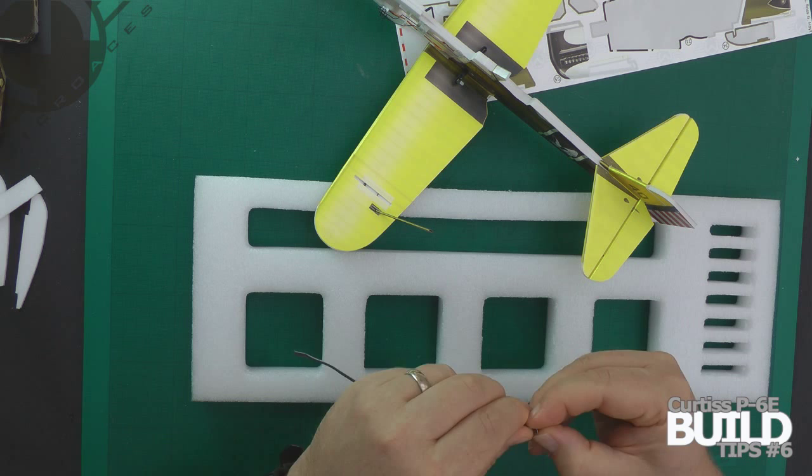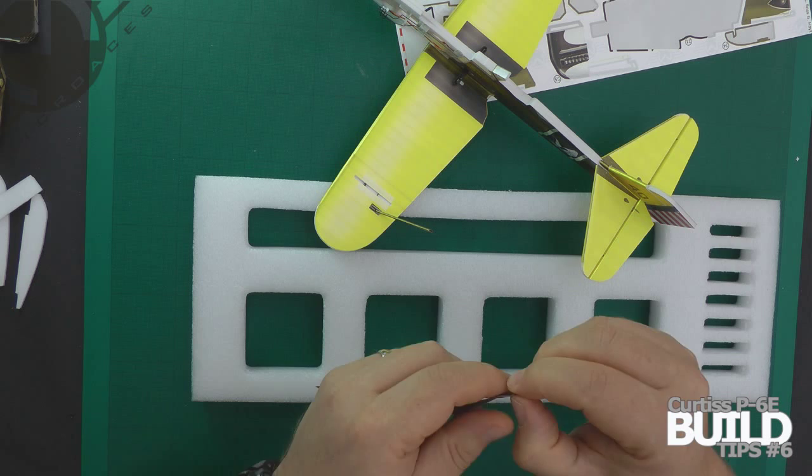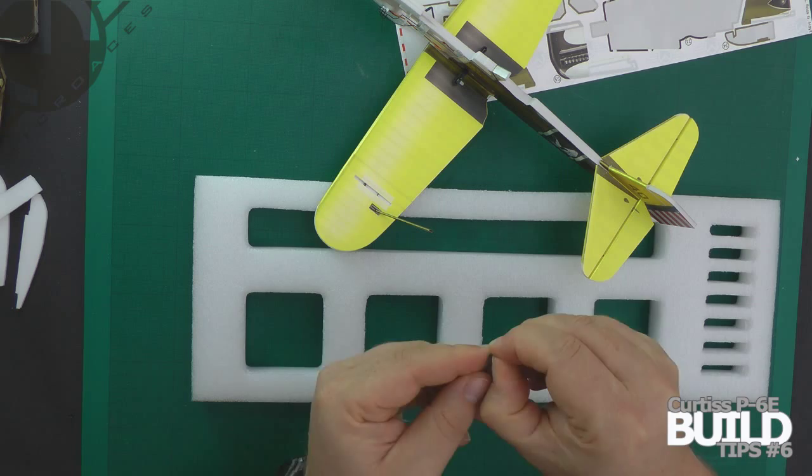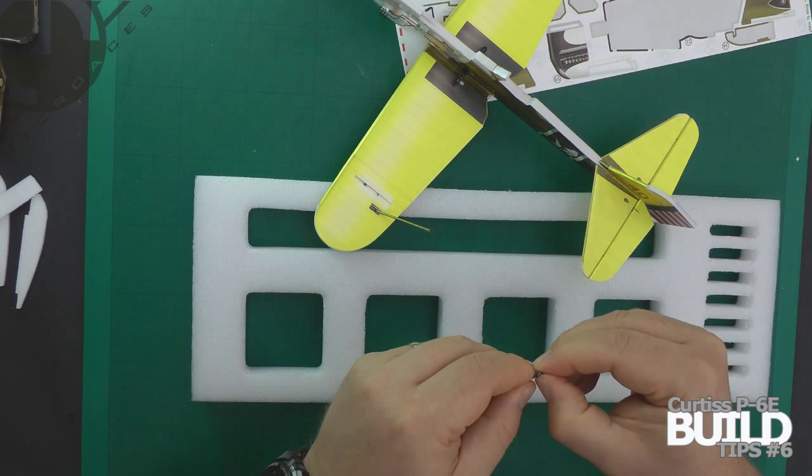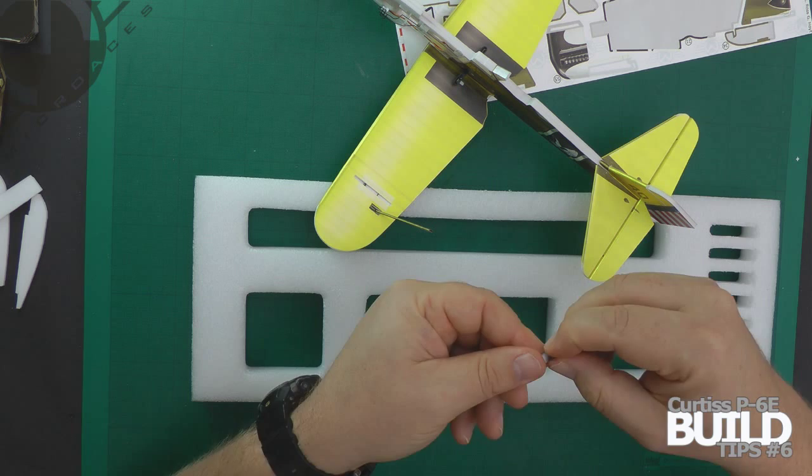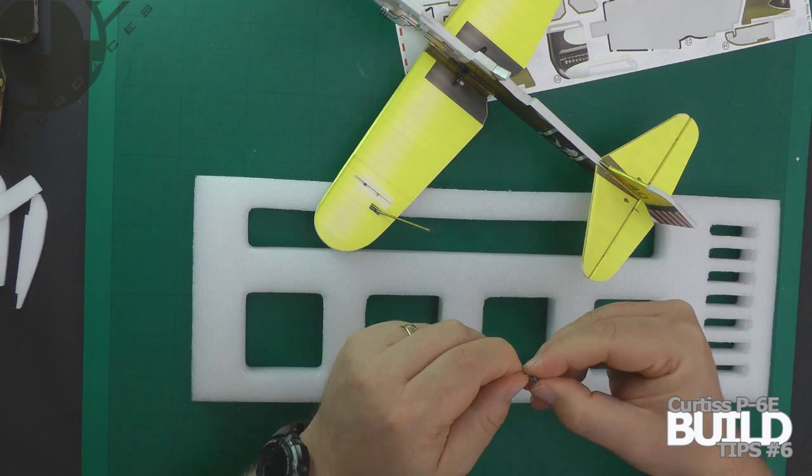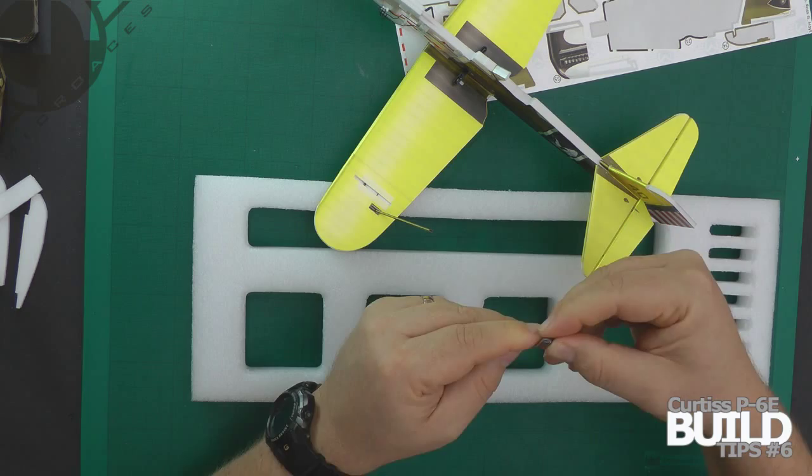Then we need to roll it as tightly as we can so it fits neatly into that cavity. The adhesive isn't too strong so you can have a couple of goes at this just to try and get it as tight as possible. You can see it's rolling neatly here. Once I've got it all done, we'll come back and fit it.